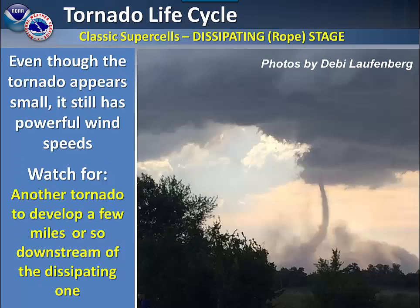As the storm starts to weaken, this is referred to as the dissipating or rope stage. It may be smaller, but it still has strong wind speeds. Be sure to watch out for another tornado to develop within a few miles.